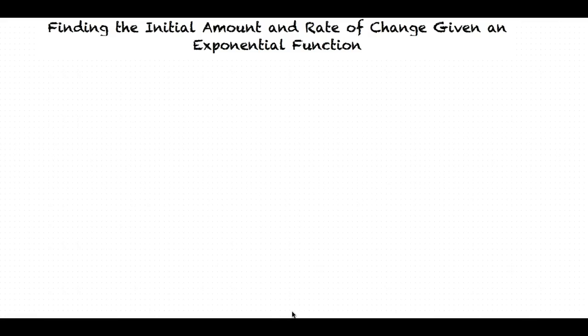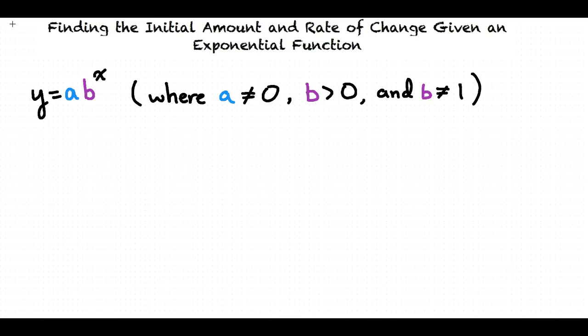This video will cover the topic of finding the initial amount and rate of change given an exponential function. A function that models exponential growth or decay is in the form y = a times b to the x power, where a is not equal to 0, b is greater than 0, and b is not equal to 1.